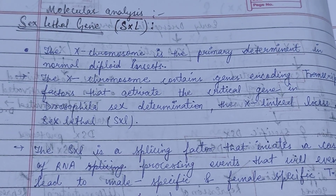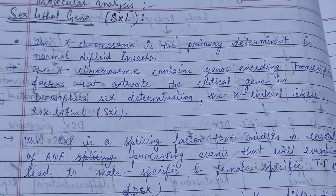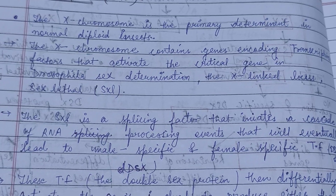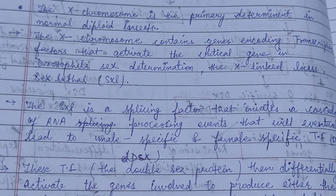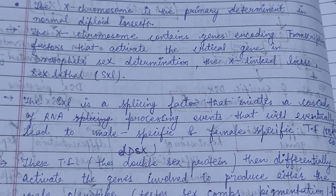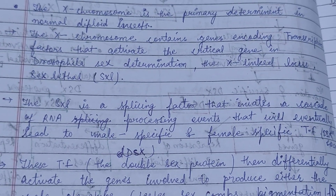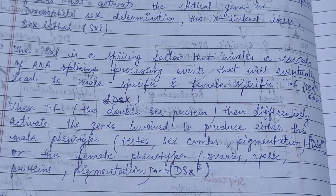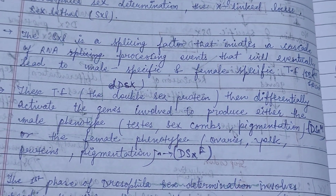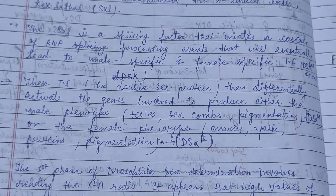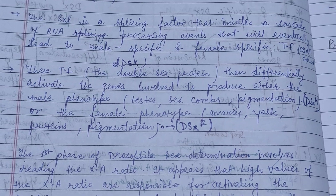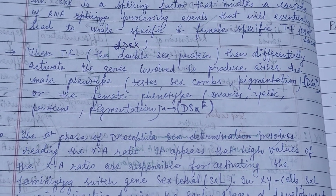The next subtopic is the sex lethal gene. The X chromosome is the primary determinant in normal diploid insects. The X chromosome contains genes encoding transcription factors that activate critical genes in Drosophila sex determination, including the X-linked locus sex lethal (Sxl). Basically, the sex lethal gene is a splicing factor that initiates a cascade of RNA processing events.